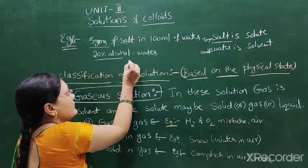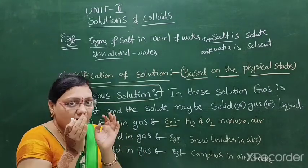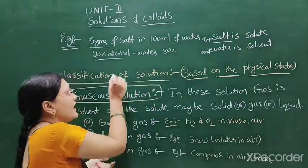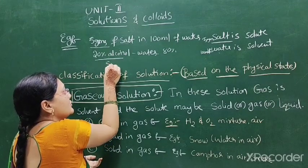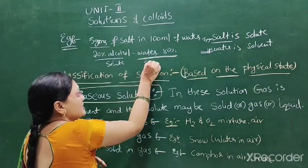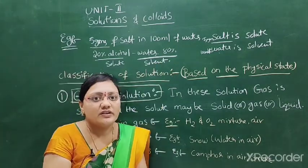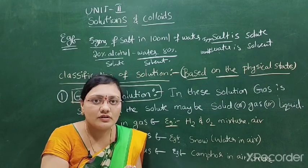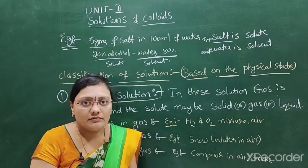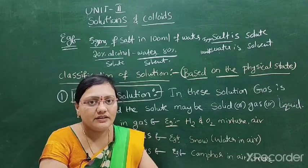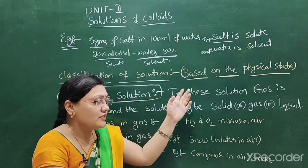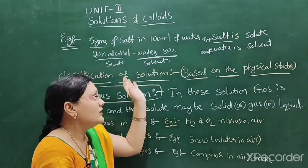Another example is 20% alcohol in water. Here, 80% is water and 20% is alcohol. Since alcohol is 20%, it is the lesser quantity and is the solute. Water is 80%, the greater quantity, so water is the solvent. To summarize: a solution is a homogeneous mixture of two or more substances at molecular or ionic level; the two components are solute (less quantity) and solvent (more quantity).